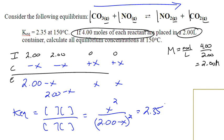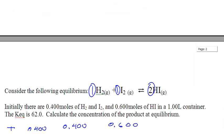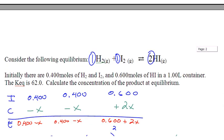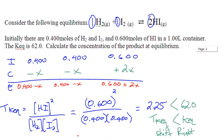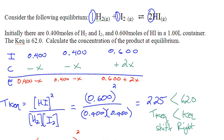The first two examples had ratios of 1:1:1:1. I'd like to spend a bit of time showing you what happens if the ratio is not 1:1:1:1, and that's this next example.